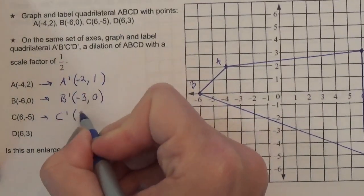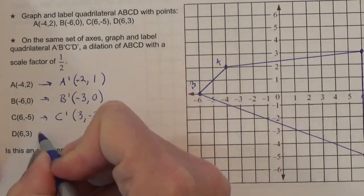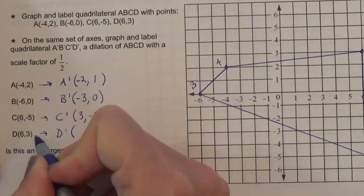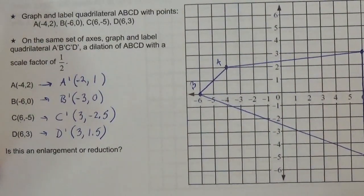Half of 6 is 3. Half of negative 5 is negative 2.5. And half of 6 is 3. Half of 3 is 1.5.